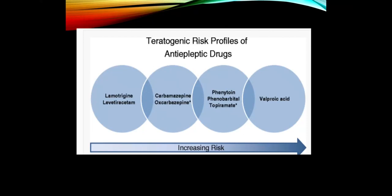Regarding seizure medications during pregnancy, valproic acid is the worst — it has the highest risk of neural tube defects of any anticonvulsant, so try to avoid it in younger women even if they tell you there's no chance they'll get pregnant. Most other medications fit in a middle range of risk. Phenytoin, phenobarbital, and topiramate carry a little higher risk than carbamazepine and oxcarbazepine. The safest medications are lamotrigine and levetiracetam, which both appear quite safe during pregnancy. In women of childbearing age needing a seizure medication, use one of these two.